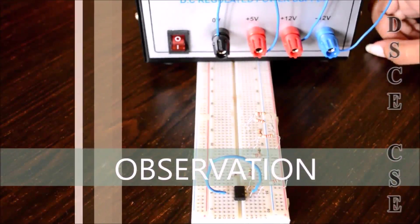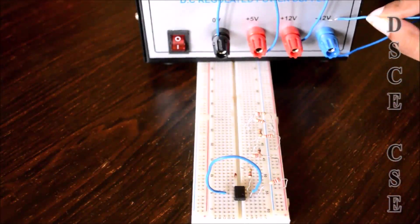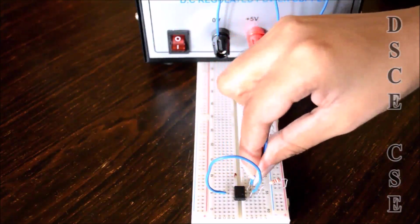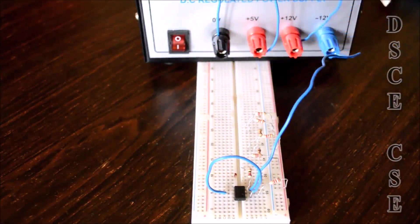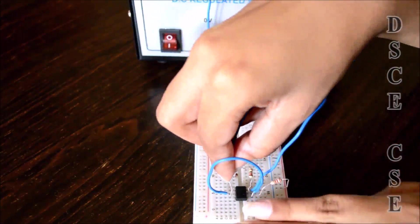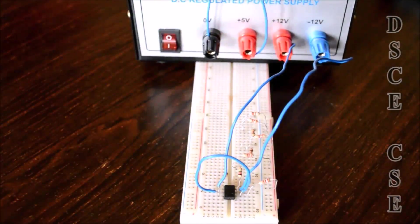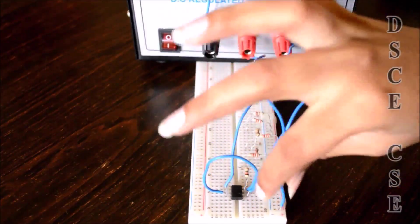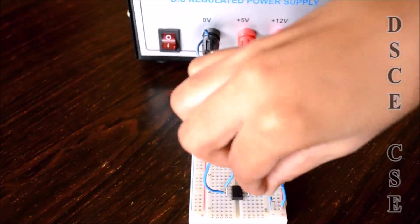We are going to be providing the power supply to the breadboard. First, we are going to be connecting minus 12 volts to pin 4 of the IC. The plus 12 volts is connected to pin 7 of the IC. The plus 5 volts supply is given to the plus 5 VCC part. The ground is given to the negative part.